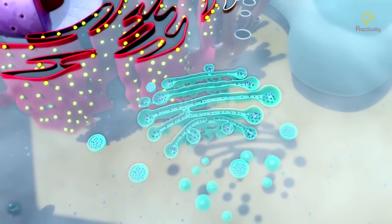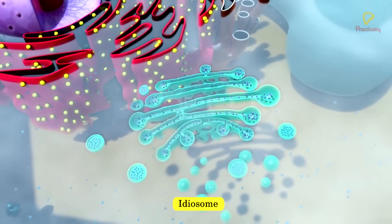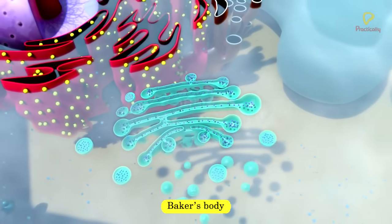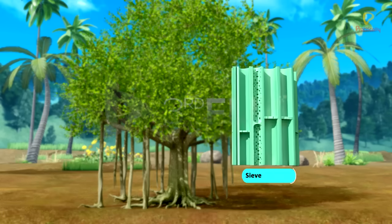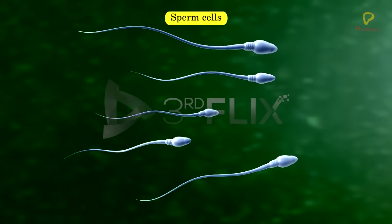Golgi apparatus is also called lipochondria, idiosome, Dalton complex, or Baker's body. It is present in all eukaryotic cells except mature sieve elements in plants and mature sperm cells and RBC in animals.